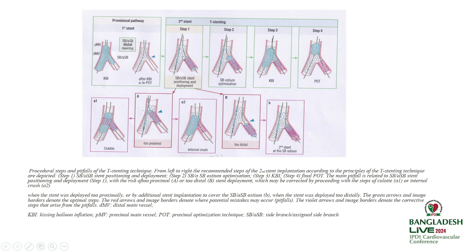While doing the procedure, when you do the side branch stenting, there may be some problems. One problem: you may pull the stent too far forward into the main vessel stent. To rescue, you have to either convert it to a culotte procedure, or do an internal crush by dilating the main vessel to crush the stent — these are the escape routes. Another issue: when you put the side branch stent, the stent can go too distal, creating a gap at the ostium. If that occurs, unfortunately there is no other way — you have to put a second stent to cover the gap and repeat steps two, three, and four again.